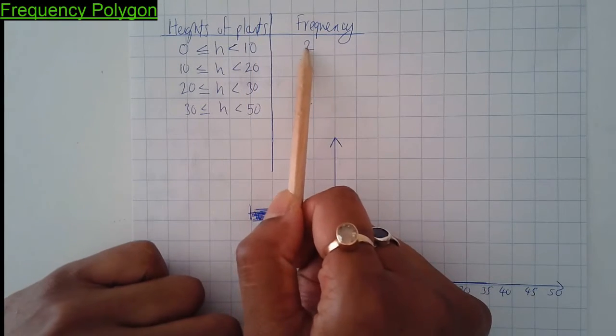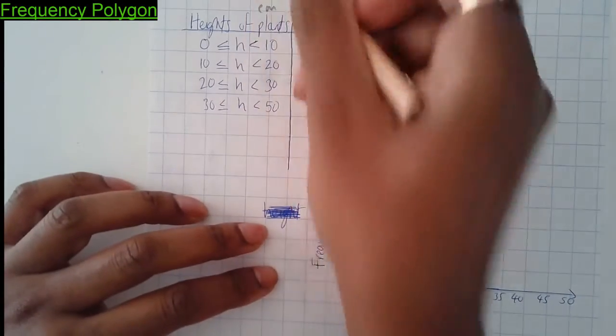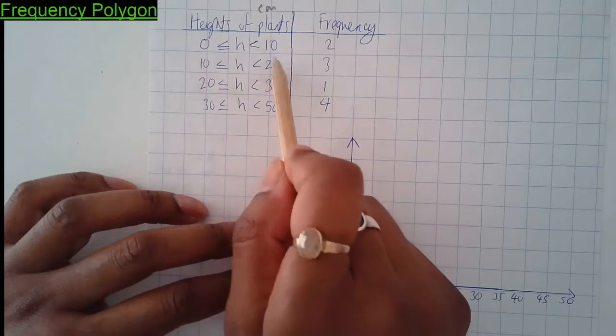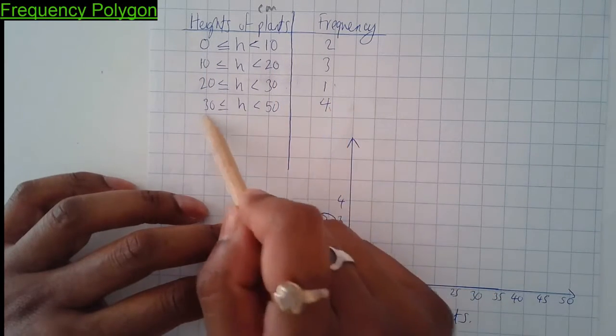There are two plants with a height between 0 and 10 centimeters. Three plants between 10 and 20, one plant between 20 and 30 centimeters, and there's four plants between 30 and 50.